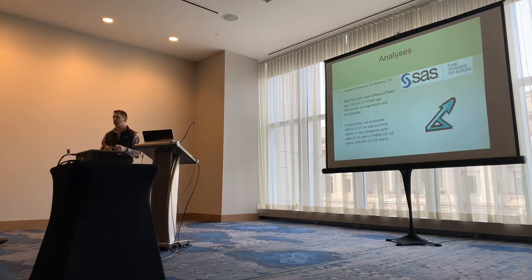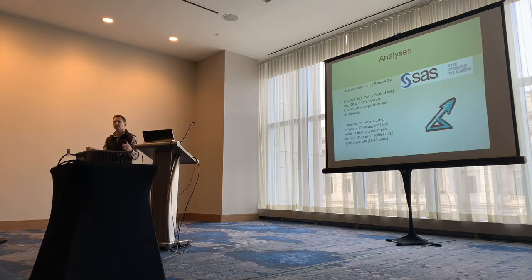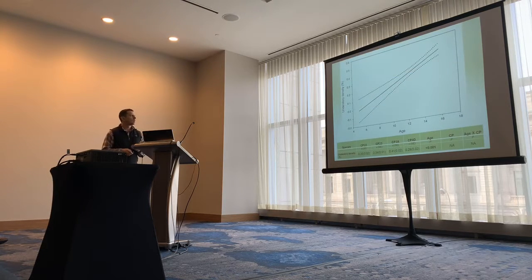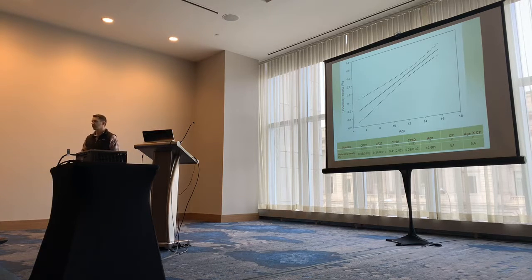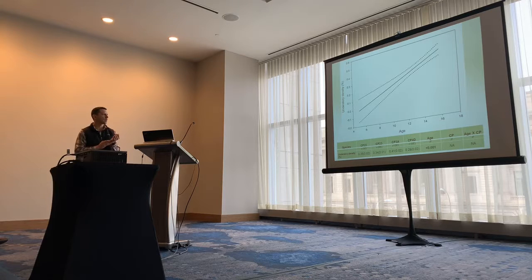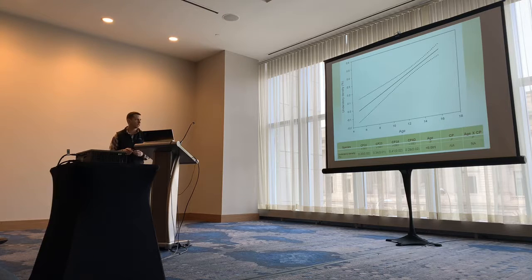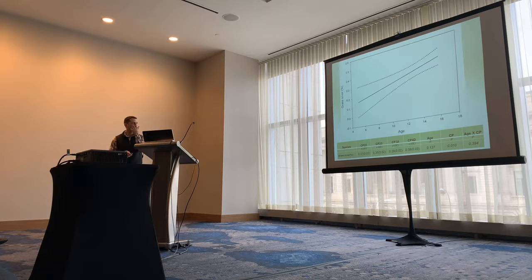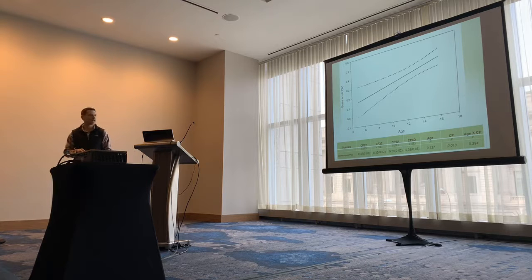In cases where there was an interaction, we broke down age into three separate categories to tease out where conservation practice differences by age were occurring. In terms of vegetation results — not surprisingly — understory density increased in all cases, with no interaction between age and conservation practice and no real differences between conservation practices. Similarly, as sites aged, grass cover increased.